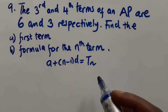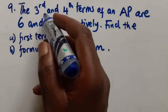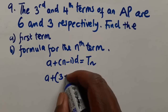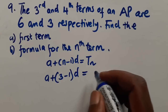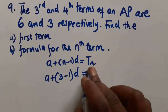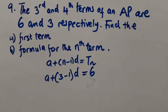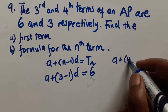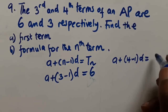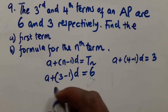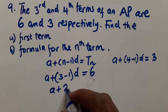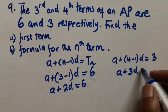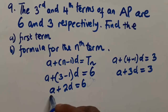We know the third term, which is a + (3-1)d, equals six, and the fourth term, which is a + (4-1)d, equals three. This gives us two equations: a + 2d = 6 and a + 3d = 3.